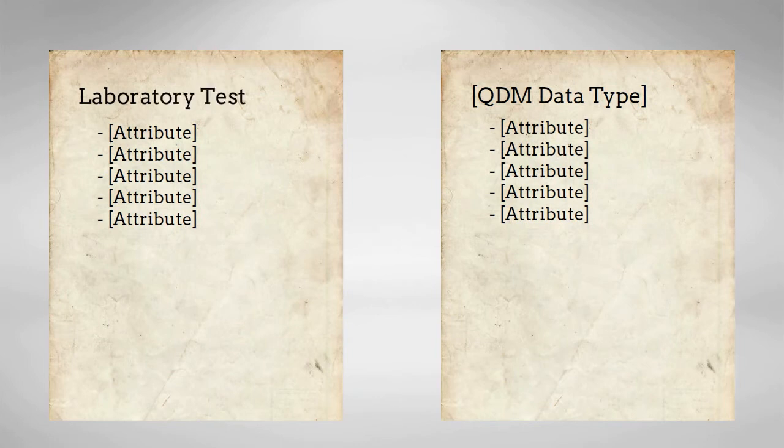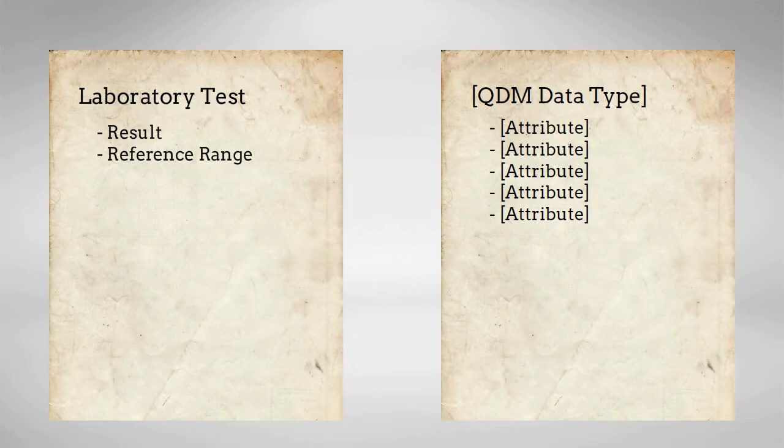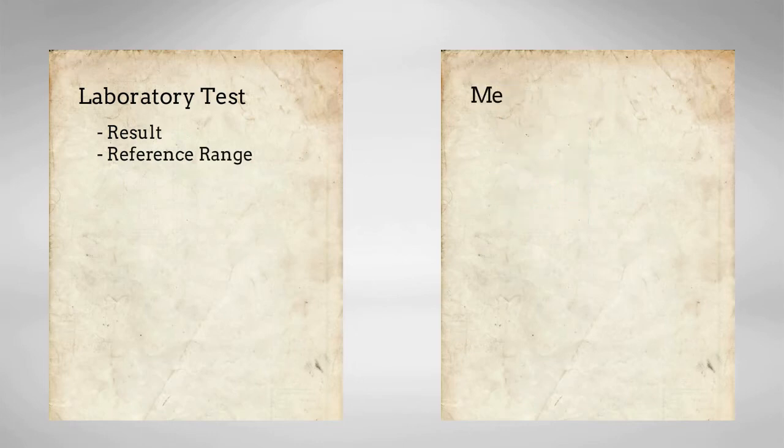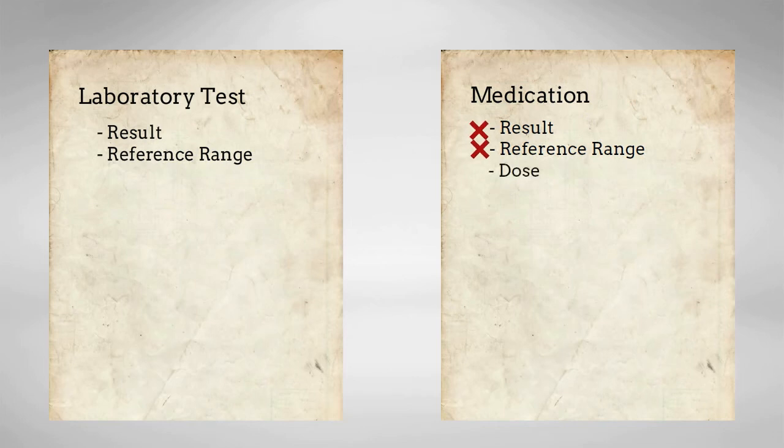For instance, a record of a laboratory test may have a result and reference range used to interpret that result. A record of a medication, on the other hand, probably doesn't need a result, but might need a dose.